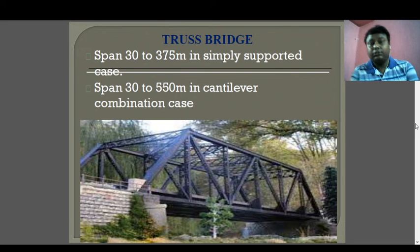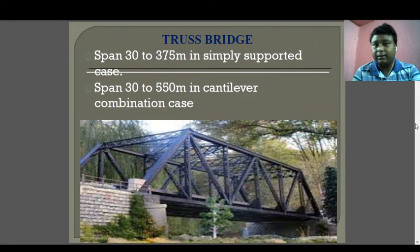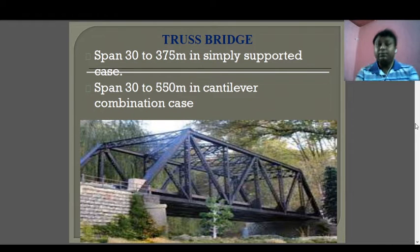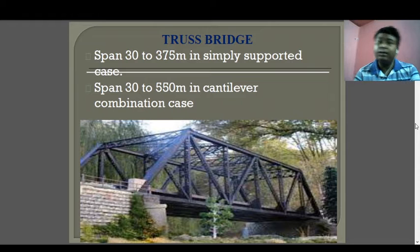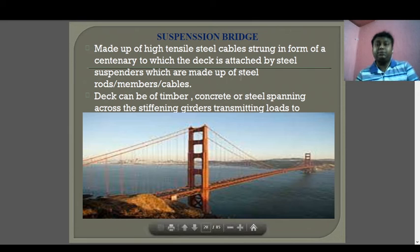Truss bridges are commonly seen in many places — you can find them in hilly areas or in areas with historical significance. The span of truss bridges is 30 meters to 375 meters in a simply supported case, and 30 meters to 550 meters for a combination of cantilever and simply supported cases. There are two types of suspension cases: simply supported and cantilever.